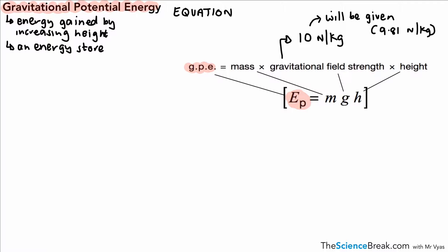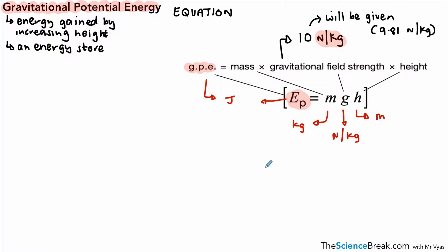We need to know the units for those different values. Height is always in metres when using this equation. G is in newtons per kilogram. Mass is in kilograms — sometimes you have to convert to kilograms in questions. And gravitational potential energy, as it's energy, is measured in joules, though sometimes you might give your answer in kilojoules depending on how large the number is.